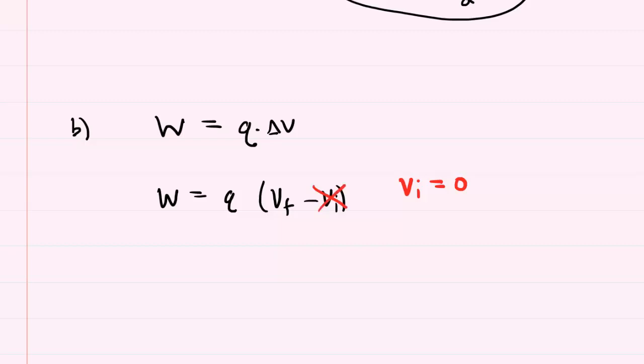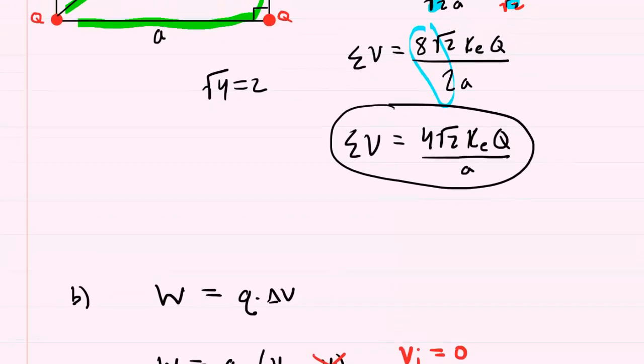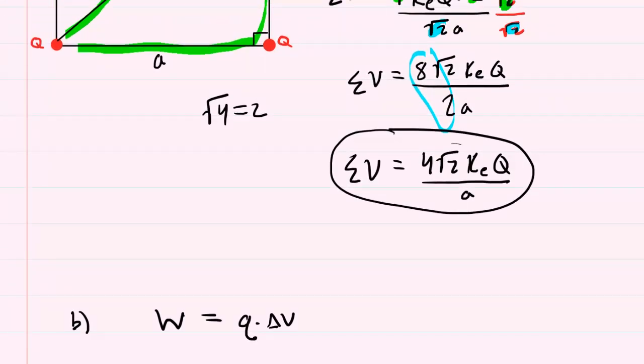and then the final potential would be the potential at the center of the square because that's where we are moving the charge to, and we just obtained that expression in part A.